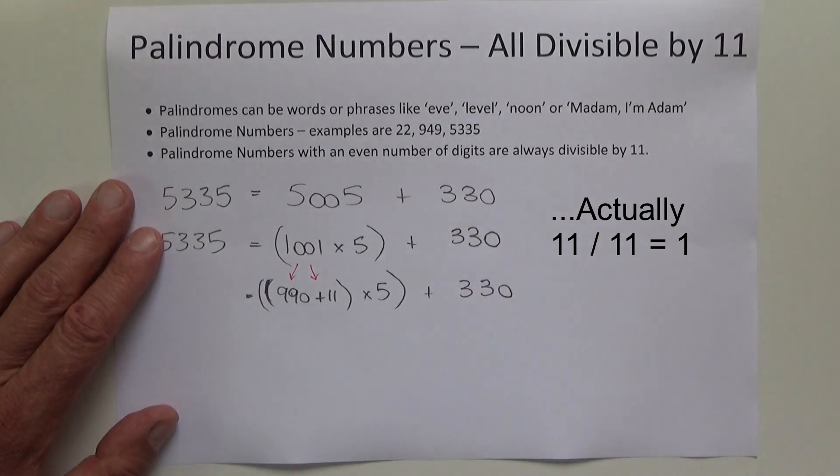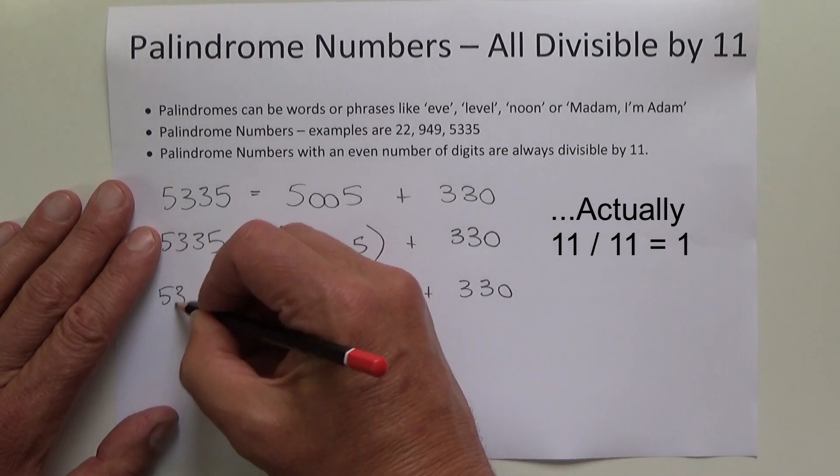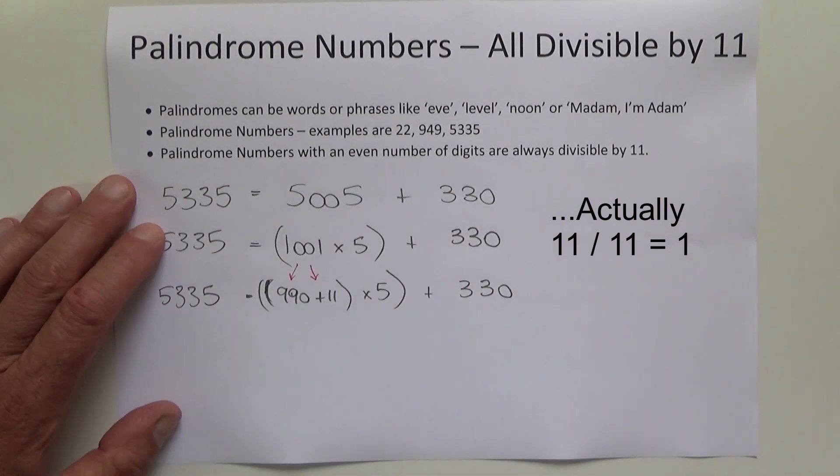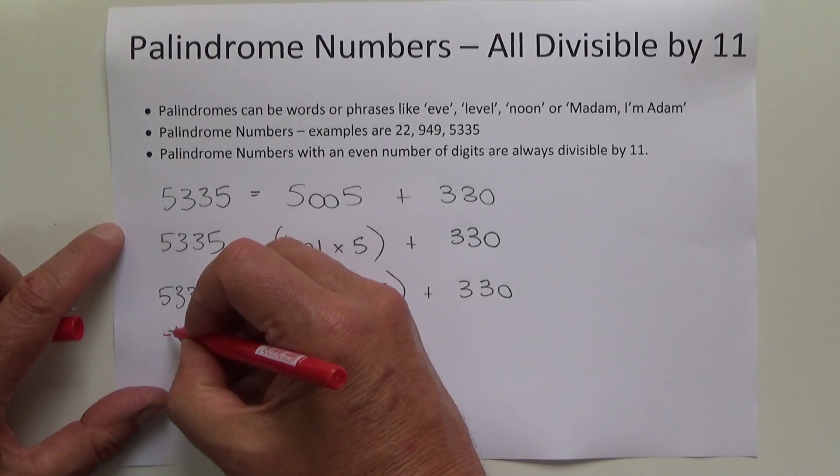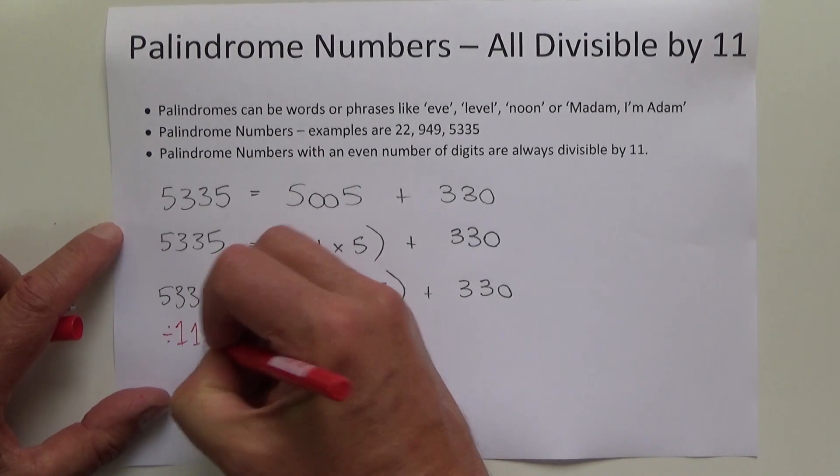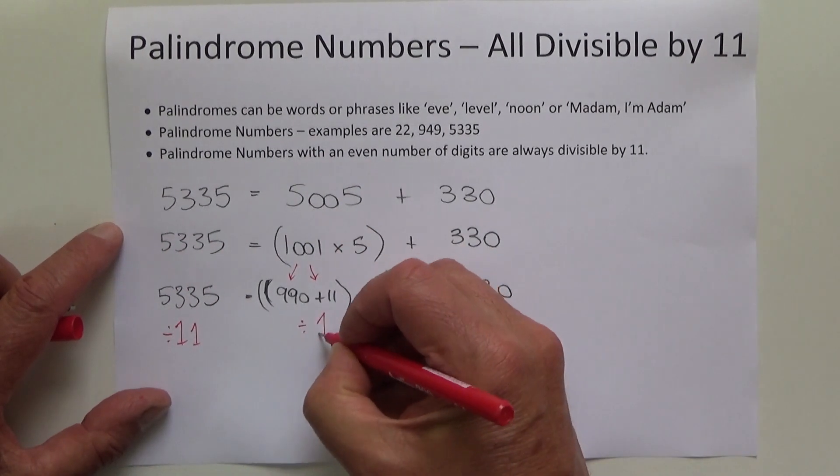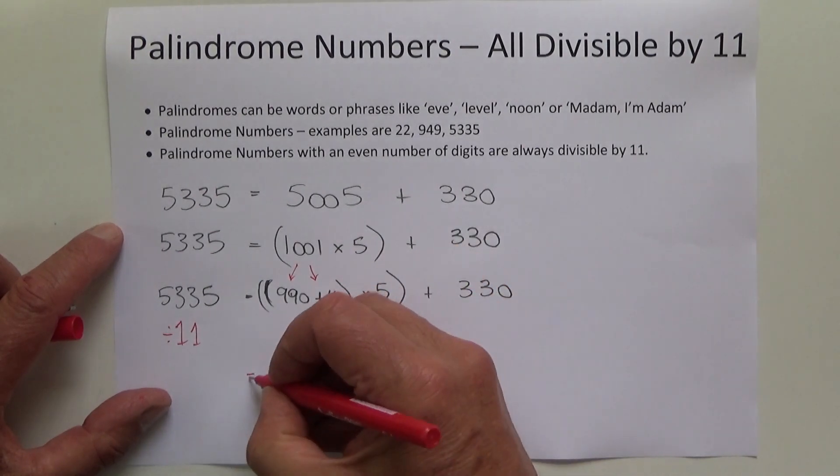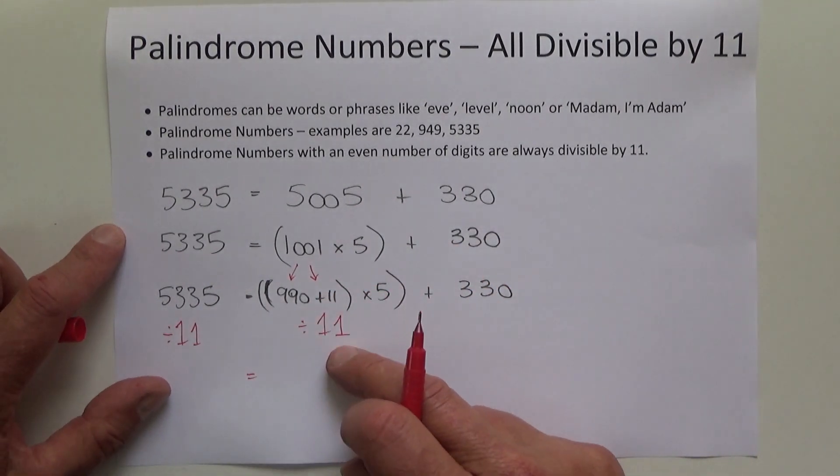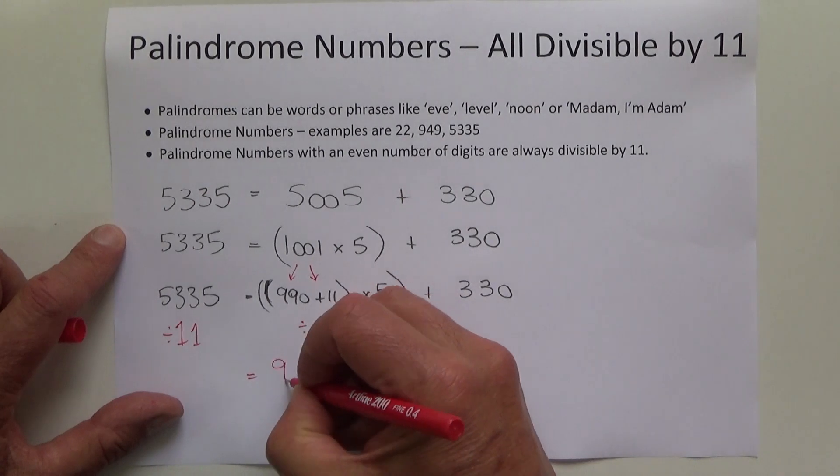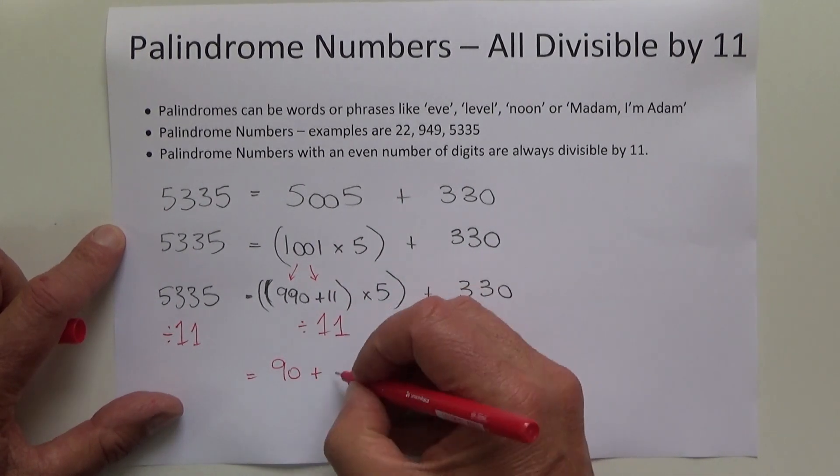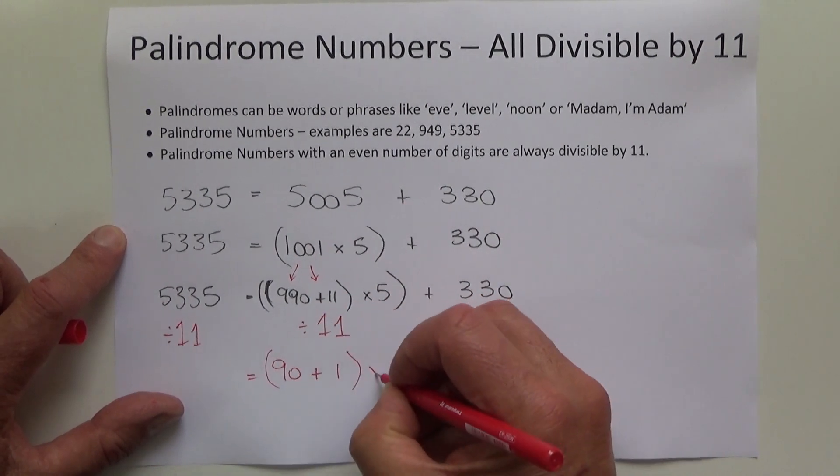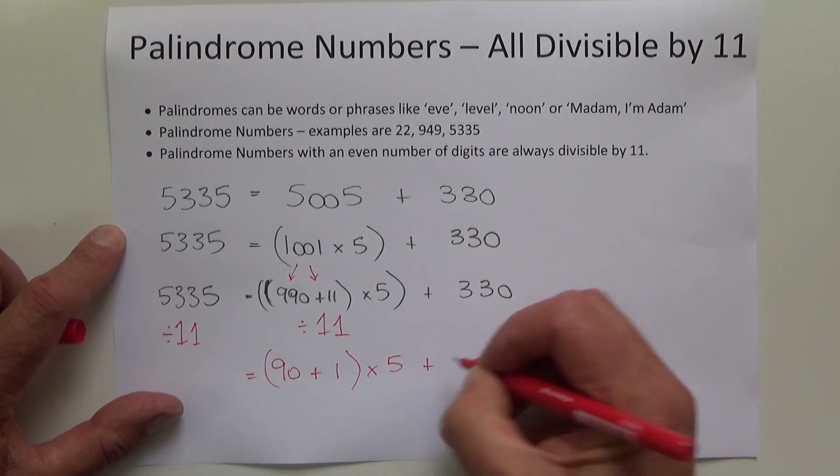Let's divide both sides by 11. We know that 990 divided by 11 is 90, we can do all these sums in our head. 11 divided by 11 is 1, we still got to multiply that by 5, and then 330 divided by 11 is 30.